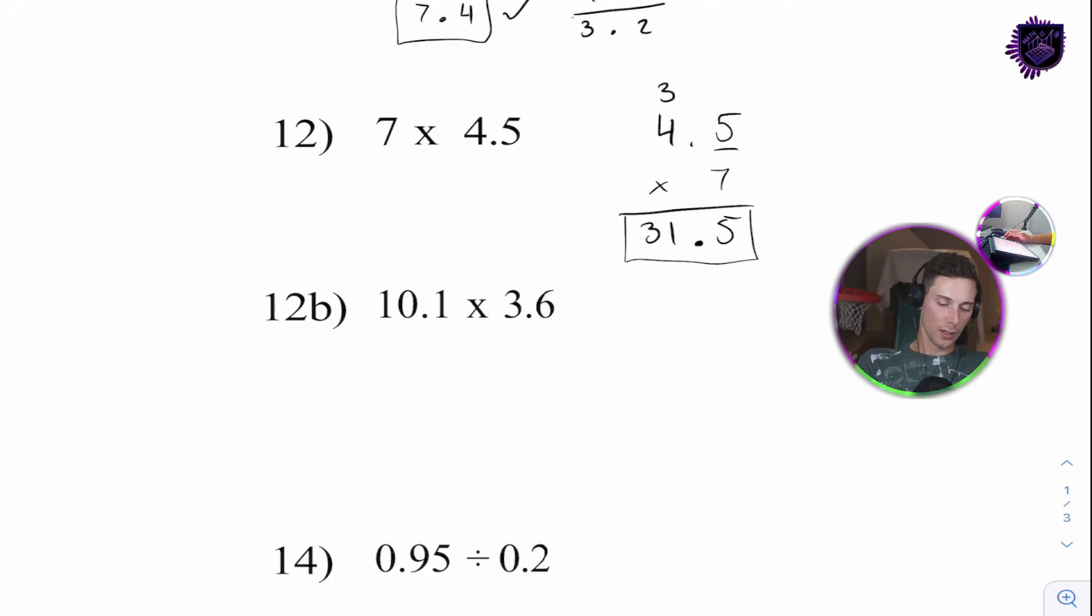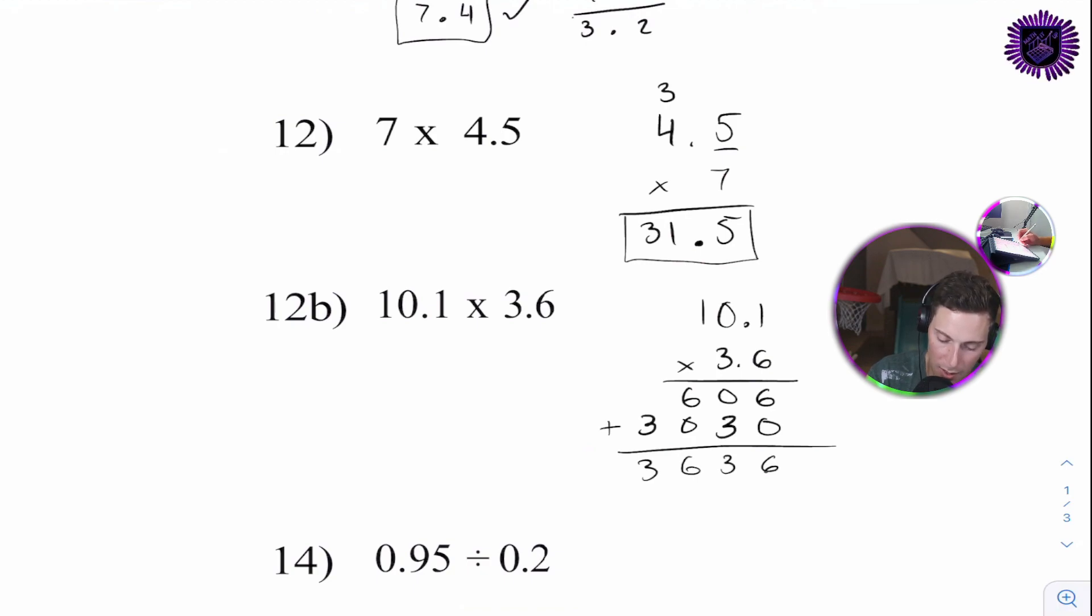Next one. Okay. We are on question 12b. 3.6 times 10.1. 10.1. 3.6. Multiply. Let's do them in order. It's going to be 6. 0. 6. Then, 30. It's going to be 3. 0. 3. That's some easy multiplication. Those numbers are easy to work with. Then, we can add them together. 6. 3. 6. 3. 2 decimal places over. Because, we have 1, 2 numbers behind decimals. So, we've moved 1, 2 numbers over.